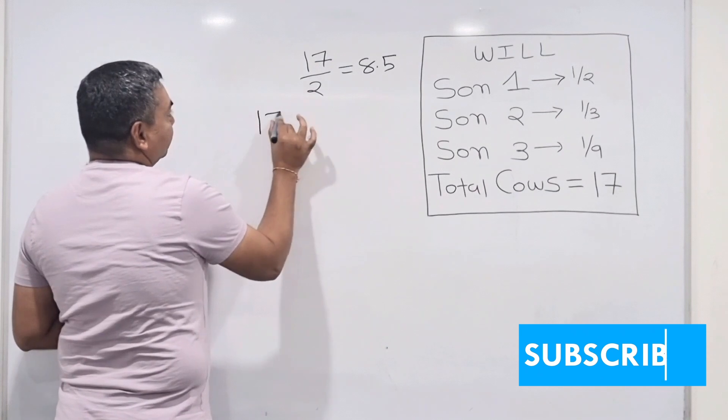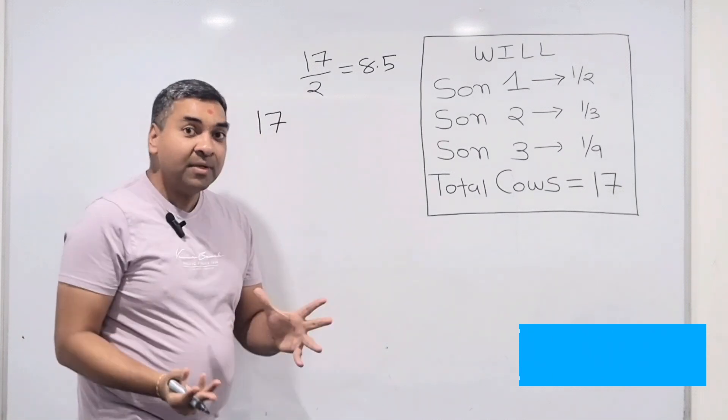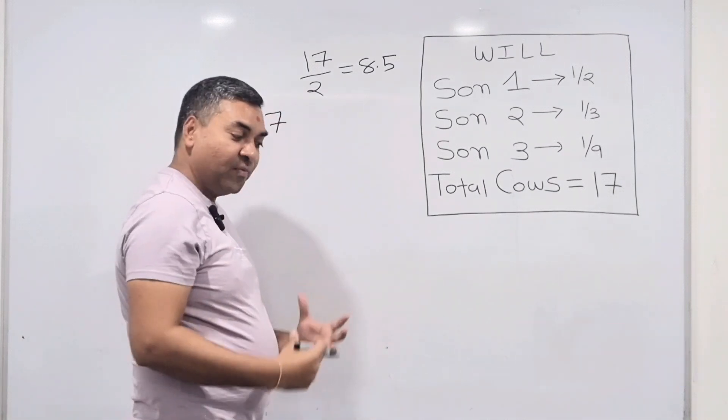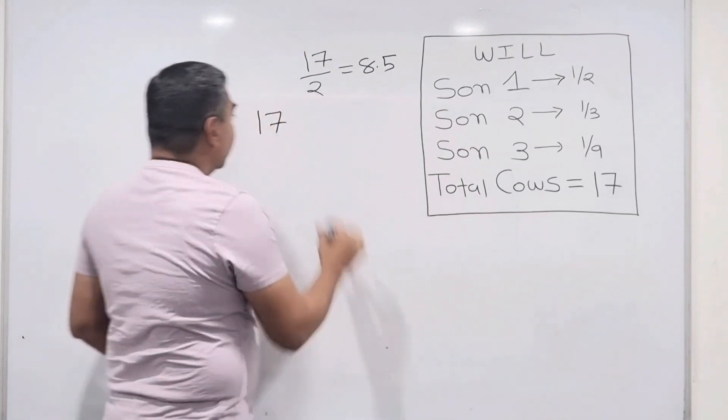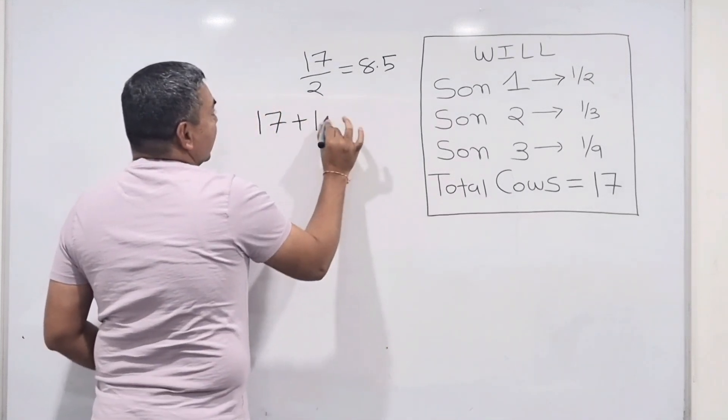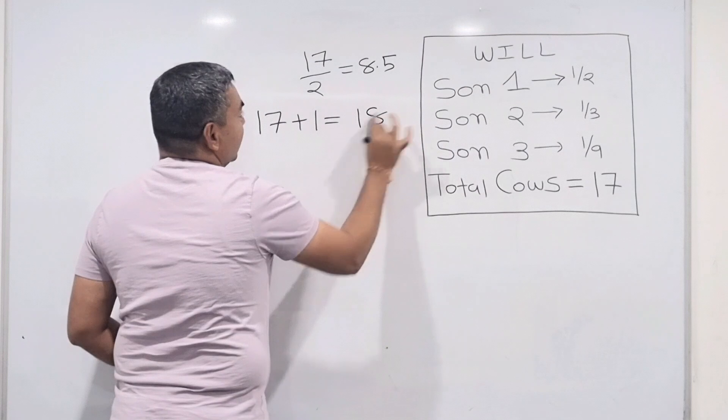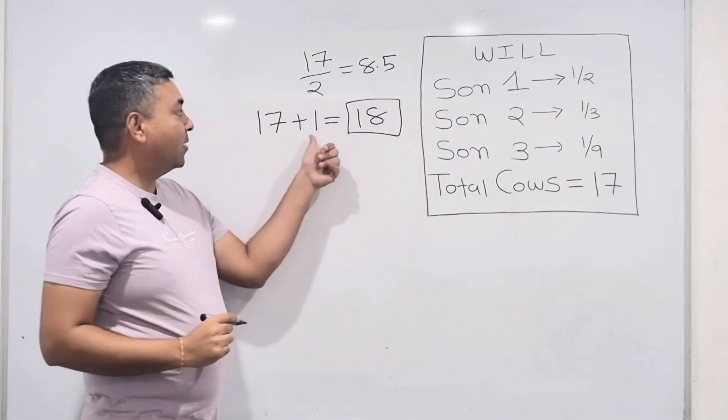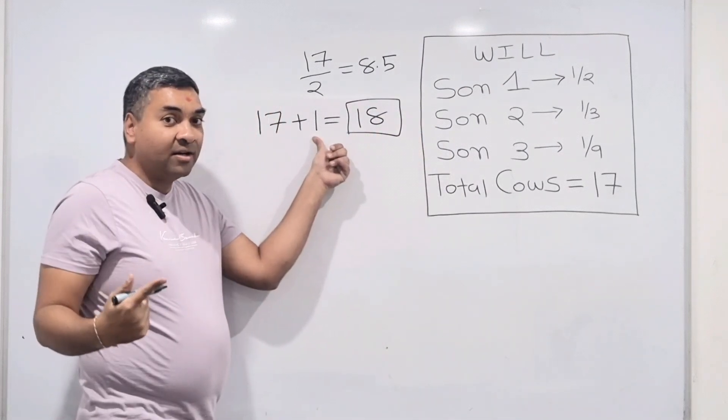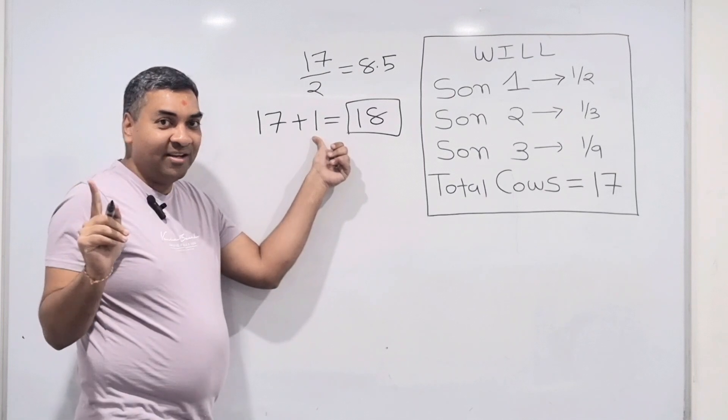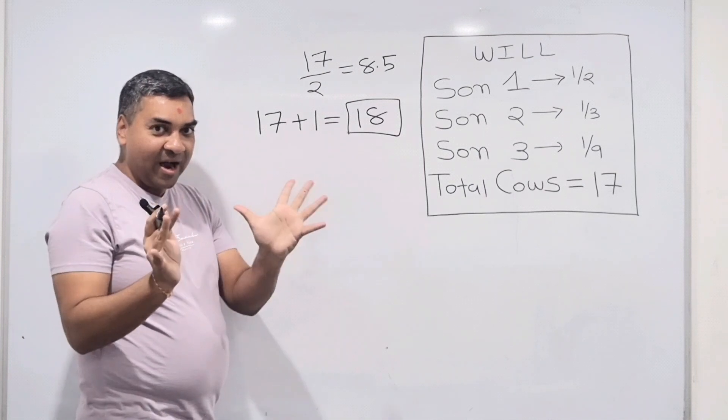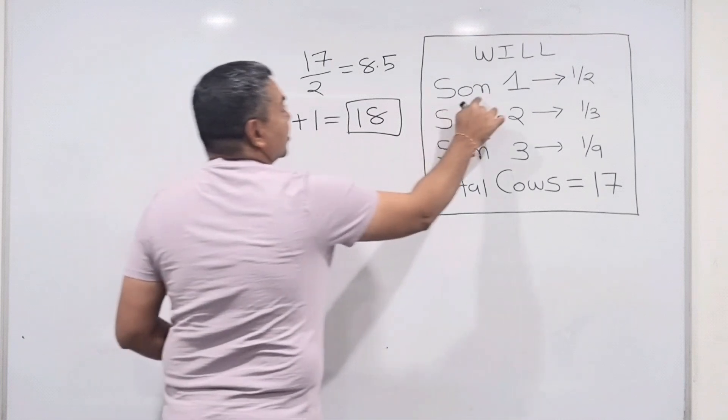Now 18 cows. But again, as I told you, that person was a smart mathematician. He is not going to give anything. So let's see how that works now. Son number one.